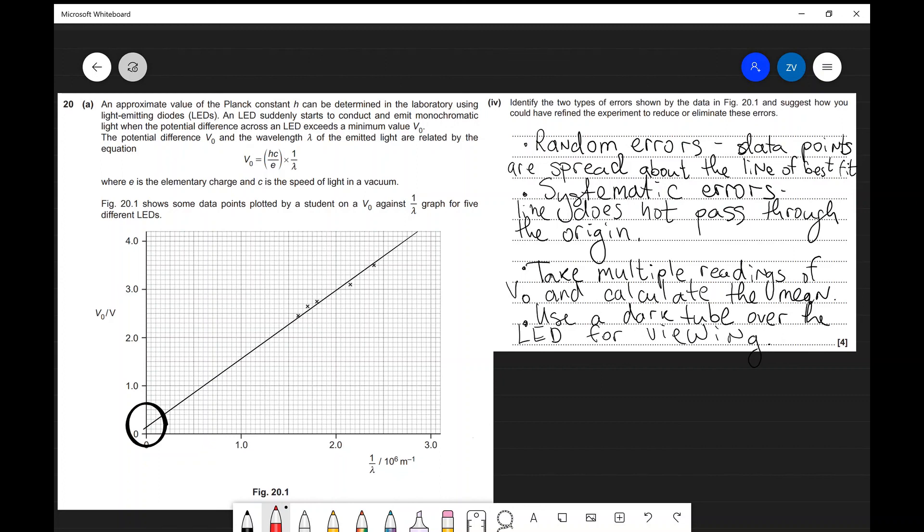Well guys, the question asked for two types of errors. We identified a random error, we identified a systematic error, and we also proposed a method of refining this experiment.